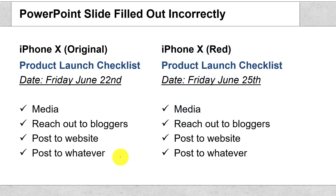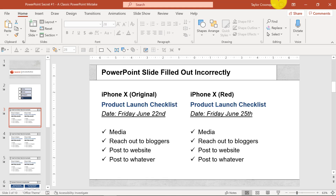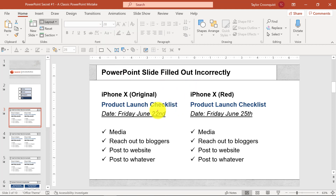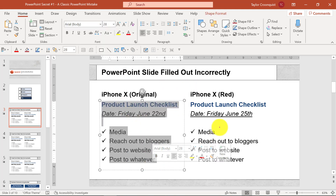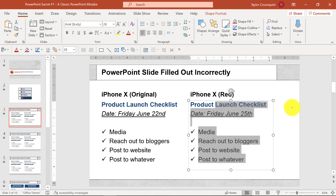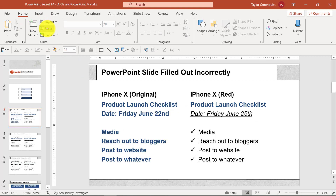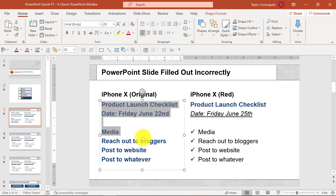Let me quickly show you what this mistake is. Here I have a classic comparison slide layout comparing two things in PowerPoint. If I come into the normal editing view, go to the Home tab and the Layout drop-down, this is a common slide you'll see in most PowerPoint templates. While this looks like everything's been filled in correctly, you know it's not because if I come to the Home tab and click Reset, I lose half of the slide's formatting.